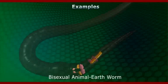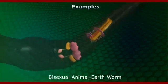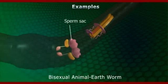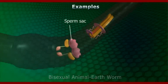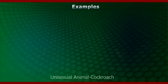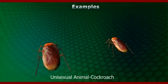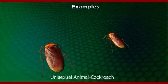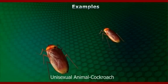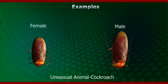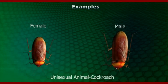Like that, testes and ovaries are present in the same individual. Examples of unisexual: the cockroach is sexually dimorphous, meaning male and female animals are separate.